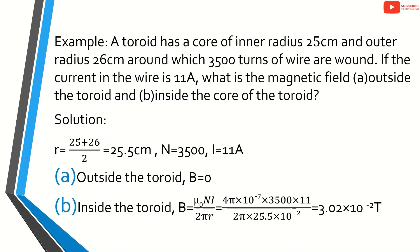Example: A toroid has a core of inner radius 25 cm and outer radius 26 cm, around which 3500 turns of wire are wound. If the current in the wire is 11 ampere, what is the magnetic field (a) outside the toroid and (b) inside the core of the toroid? The mean radius is (25 + 26) divided by 2, equal to 25.5 cm, that is 25.5 × 10 raise to minus 2 meter.